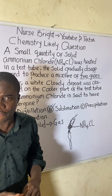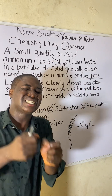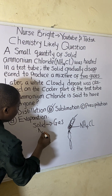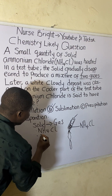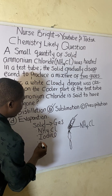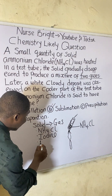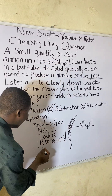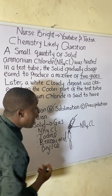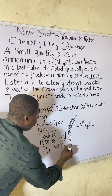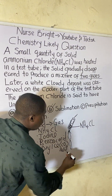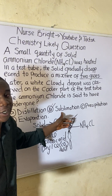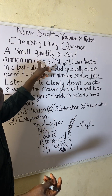There are other substances that undergo sublimation besides ammonium chloride (NH4Cl). Examples include iodine, ferrocene, benzoic acid (an organic compound), and dry ice - which is carbon dioxide (CO2) in solid form. In other exam questions, they may substitute the compound with any of these, so you can recognize sublimation without stress.